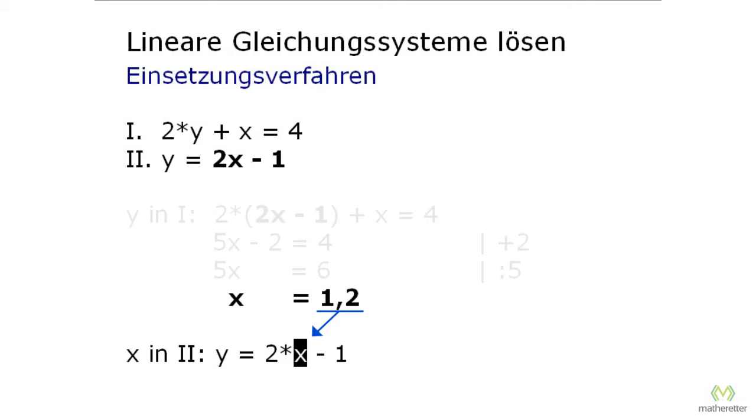Then here is 2 times x, and x is 1.2. 2 times 1.2 is 2.4, and 2.4 minus 1 is 1.4. Well, now we have y2, and now we are done. Of course you can now check if the values y equals 1.4 and x equals 1.2 are correct. Insert them and the two equations will come out to be correct.